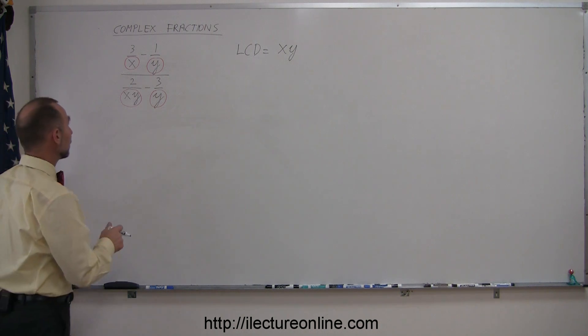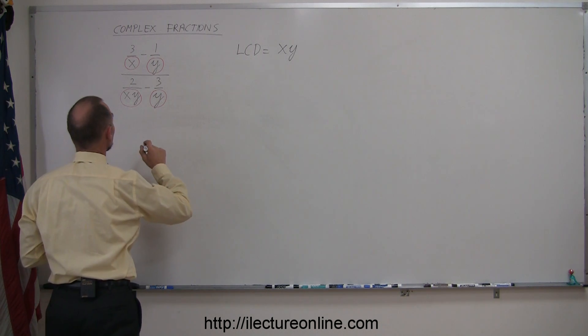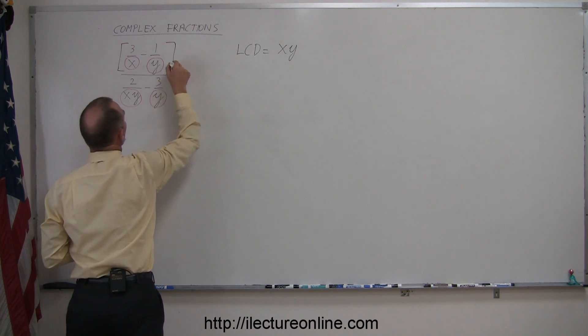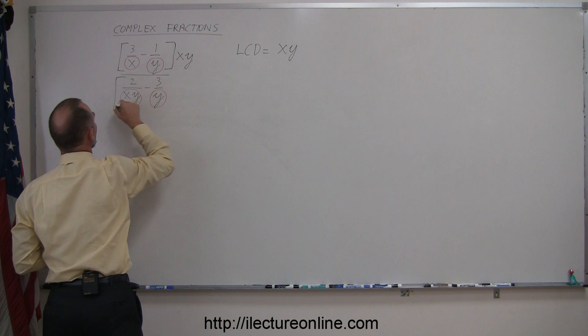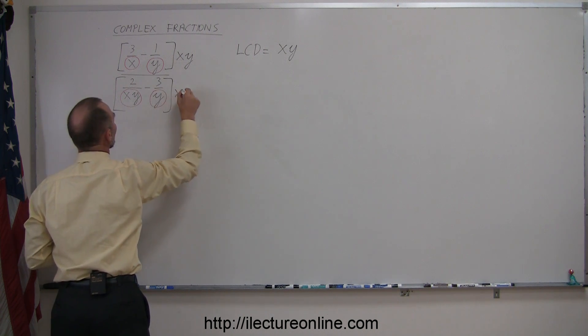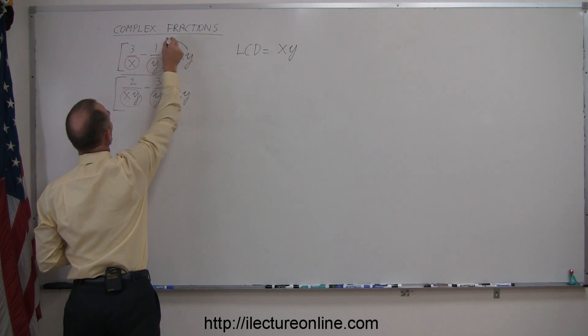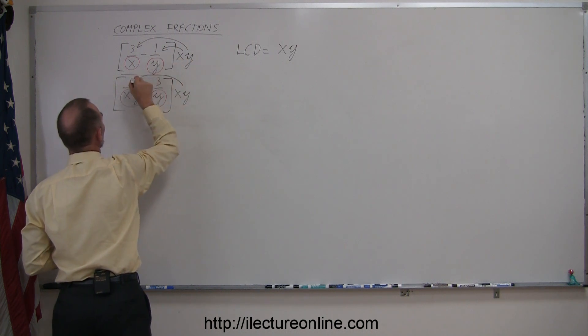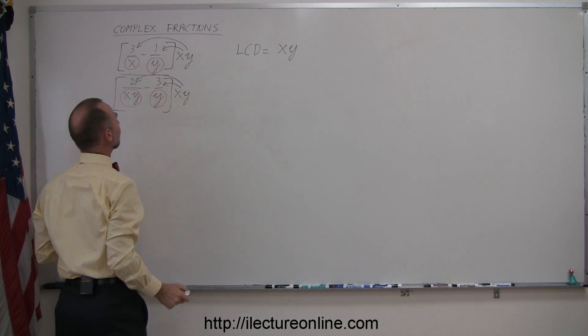Which means I'm going to multiply both the numerator and the denominator by that lowest common denominator. So I'm going to multiply the numerator by x times y, and I'm going to multiply the denominator times x times y. Of course, I'm going to multiply each of these fractions.